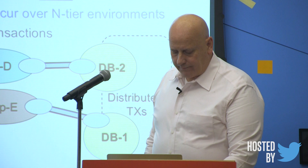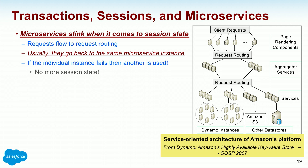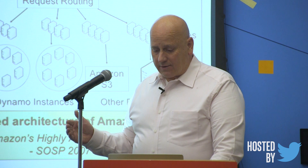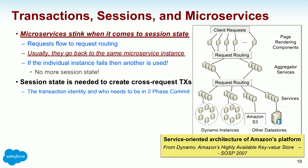Transaction sessions and microservices: I had an N-tier system, and now we're going gonzo with microservices. Microservices are cool, but they stink when it comes to session state — they just do. That session state breaks down because I can't go across multiple servers. You usually go back to the same microservice instance but it doesn't always. You can't easily do a transaction. You need session state to do a cross-request transaction: if I send a request mid-transaction, get an answer, then send another in the same transaction, I need session state to correlate those.